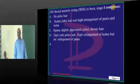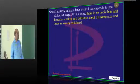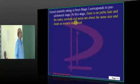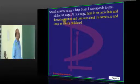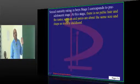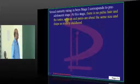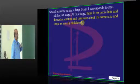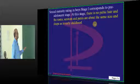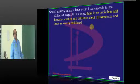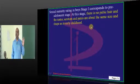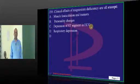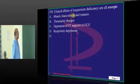Sexual maturity rating — what do you mean by stage 1? Stage 1 corresponds to the pre-adolescent stage, at which there is no pubic hair and the testes, scrotum, and penis are all of the same size and shape as in early childhood. SMR stages 1, 2, 3 — you must know how to basically grade these in pediatrics.